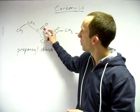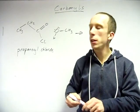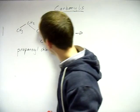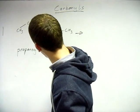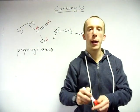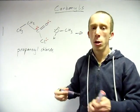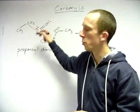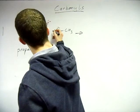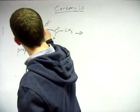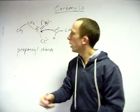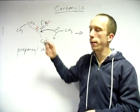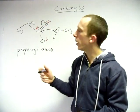Similar to before with nucleophilic addition, there's a big electronegativity difference — all these groups are pulling electrons away from the carbon, making it electron deficient, delta positive. A nucleophile comes along with lone pairs and attacks that carbon. The double bond breaks because carbon can only have four bonds.